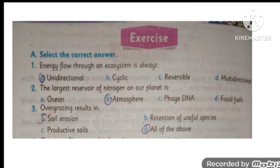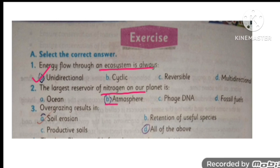MCQ number one: energy flow through an ecosystem is always unidirectional. MCQ number two: the largest reservoir of nitrogen on our planet Earth is the atmosphere.